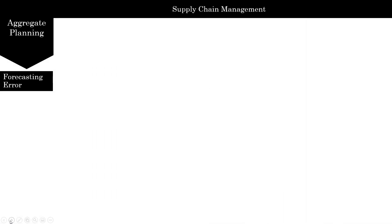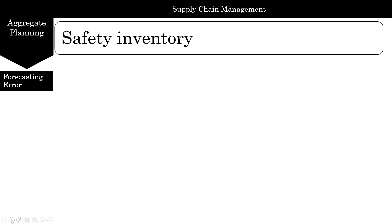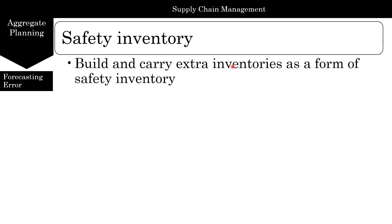The next question is: how do we deal with forecasting error? Remember, we are optimizing our aggregate plan specifically with respect to the forecast. So we really don't know how much demand we're going to have, and all forecasts have an error. So how do we handle that forecasting error? We handle it by using safety inventory — we build and carry extra inventory in the form of safety inventory.